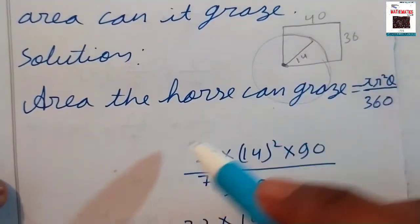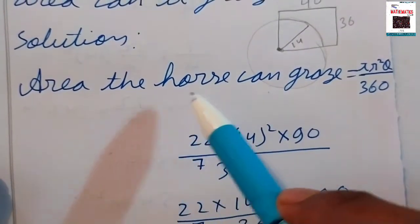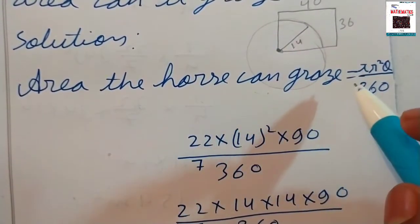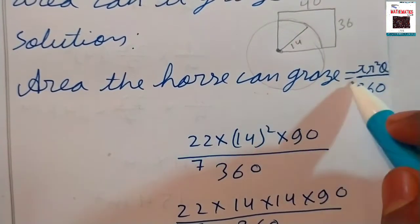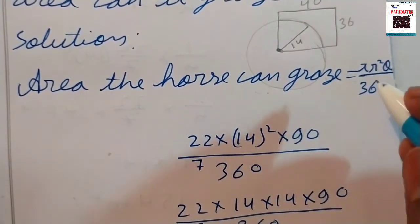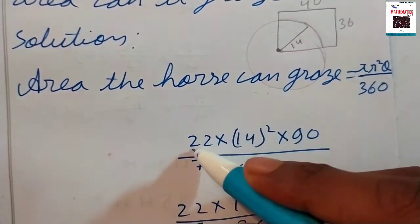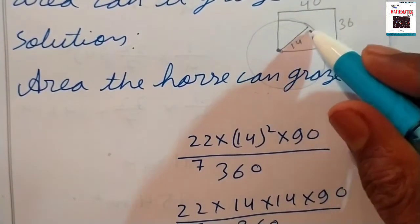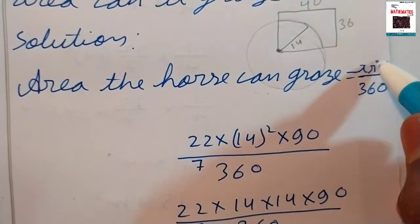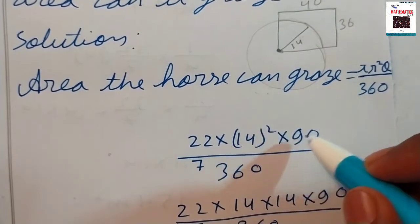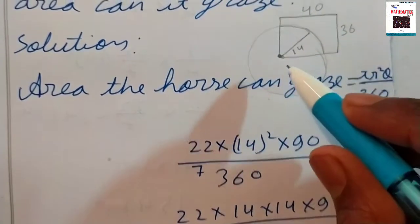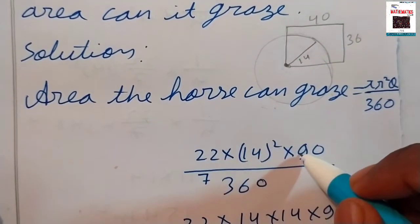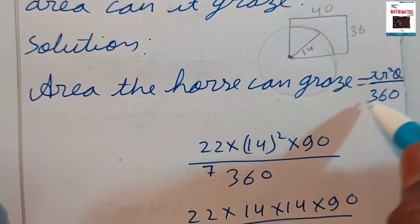The area the horse can graze is the area of a sector. The formula is πr²θ/360. Here we put pi as 22/7, radius r equals 14, and theta equals 90 degrees because the corner of the rectangle is 90 degrees. This is divided by 360.